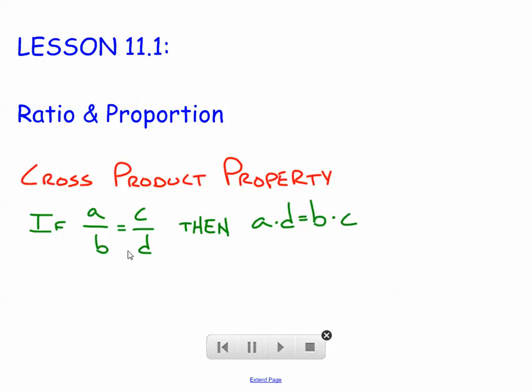So if we've got a proportion, a proportion being a ratio equal to another ratio, then the cross-products of that proportion should also be equal. That is A times D equals B times C. That's why they're called cross-products.